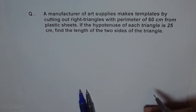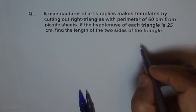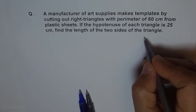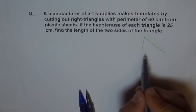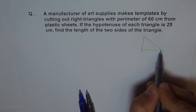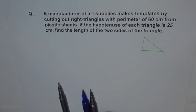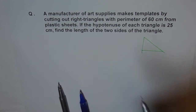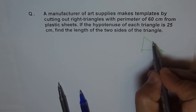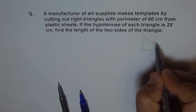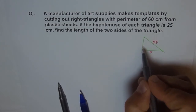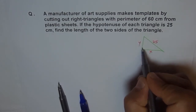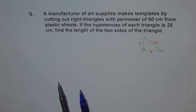So that means there is a right angle triangle. Let's try to make one. So let's say this is our right angle triangle. Now it's given that the hypotenuse is 25, so let this be 25. And let this be x and let this be y. This is the right angle triangle — that's the triangle we have for the time being.